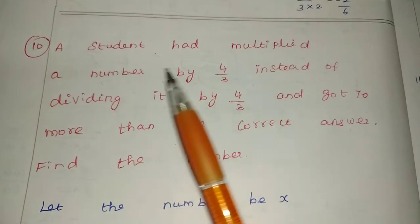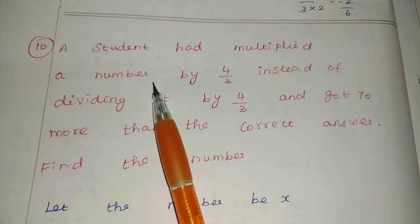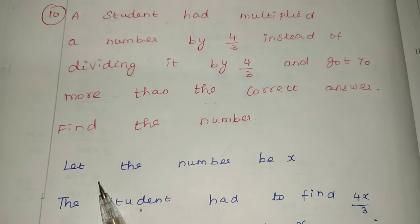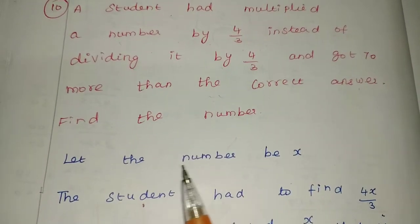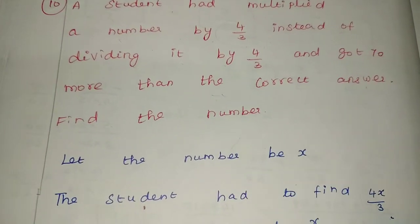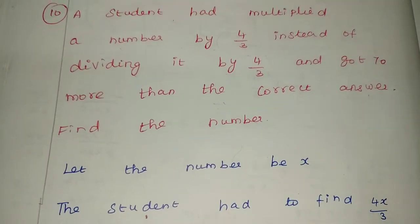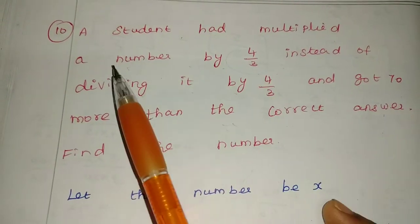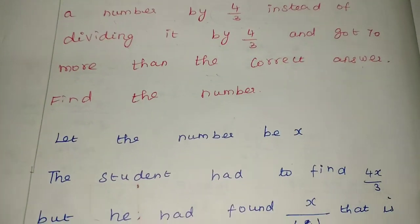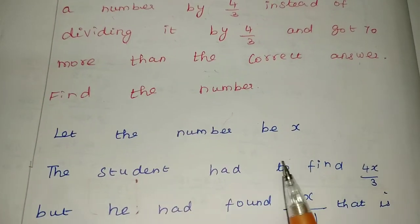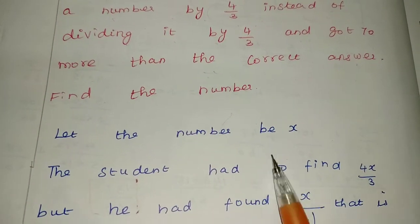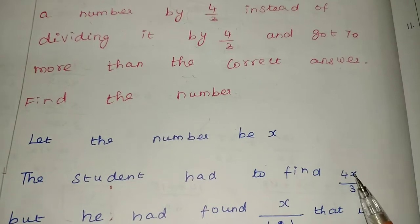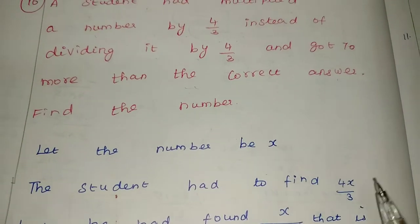The student had multiplied the number. First, we don't know the number, so let the number be x. The number we are keeping as x.